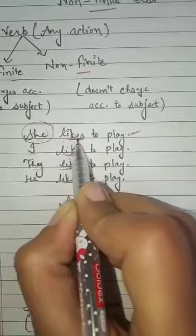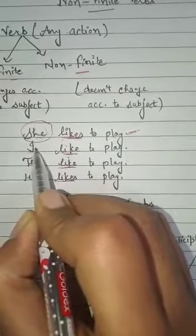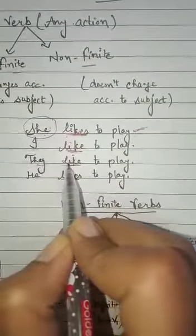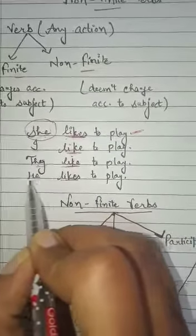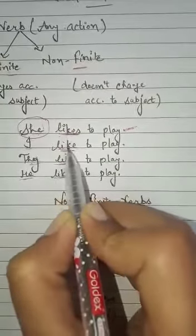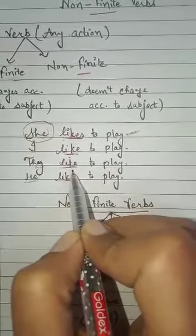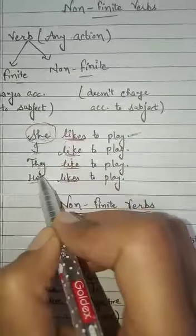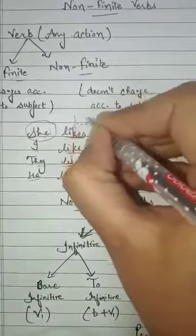Since 'she' is a singular subject, we use 'likes.' With 'I,' we use 'like.' With 'they,' which is a plural subject, we use 'like.' Again with a singular subject like 'he,' we use 'likes.' So 'like' and 'likes' are changing because of the subject — specifically because of singular or plural subject. Therefore, this verb is a finite verb.